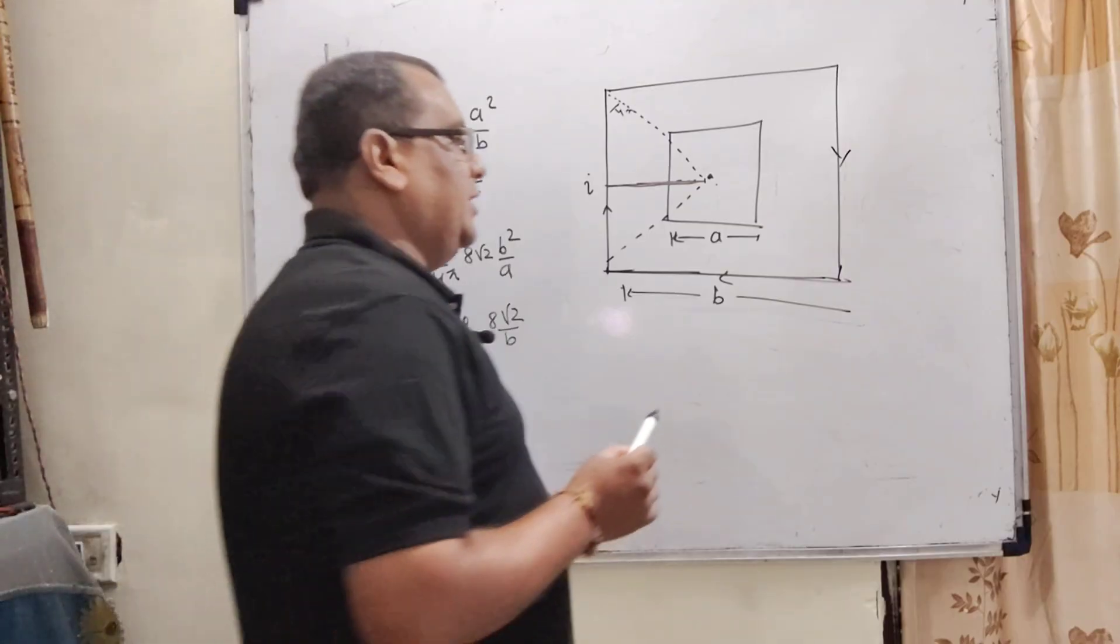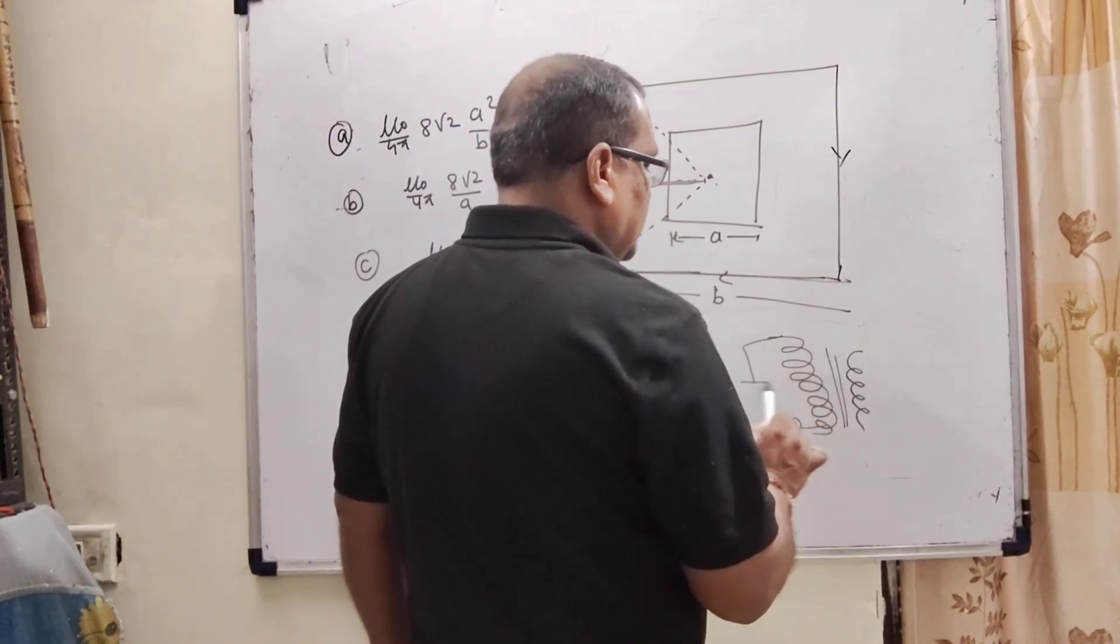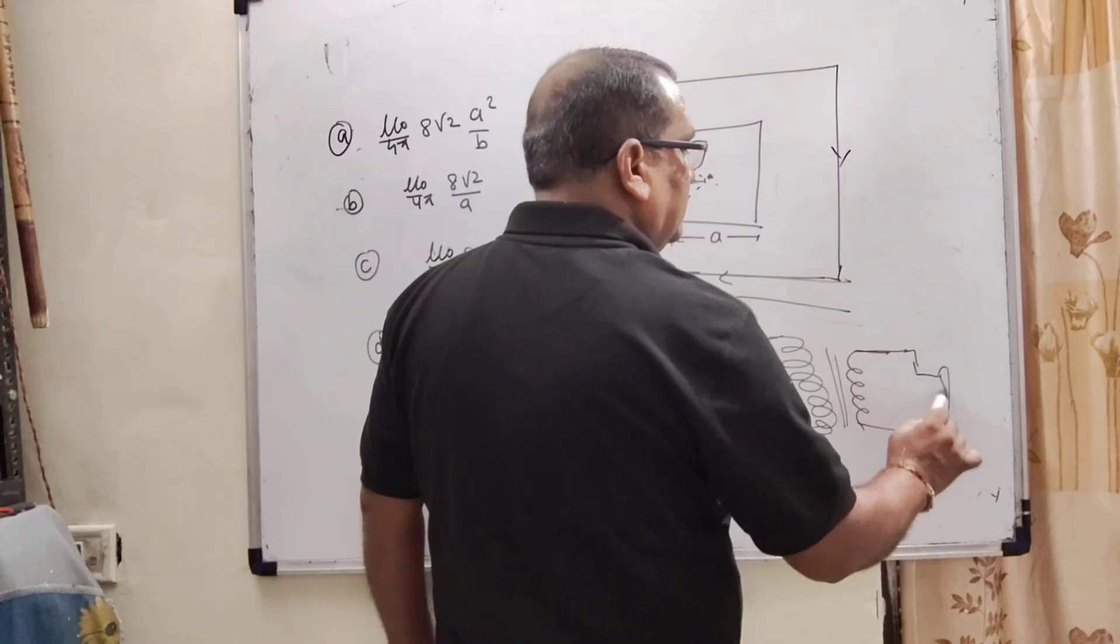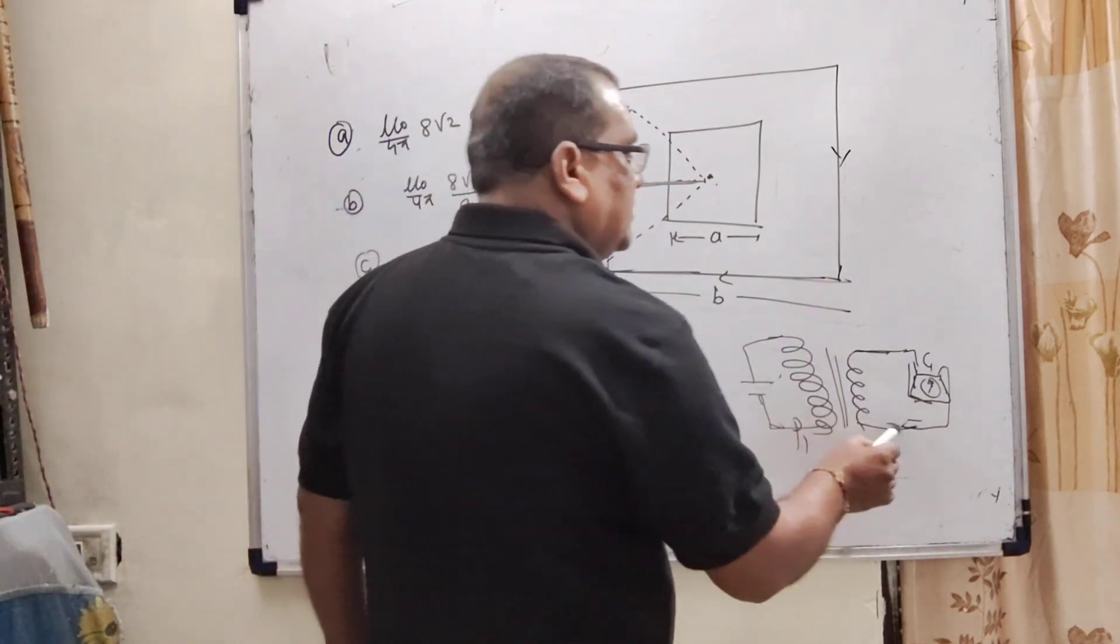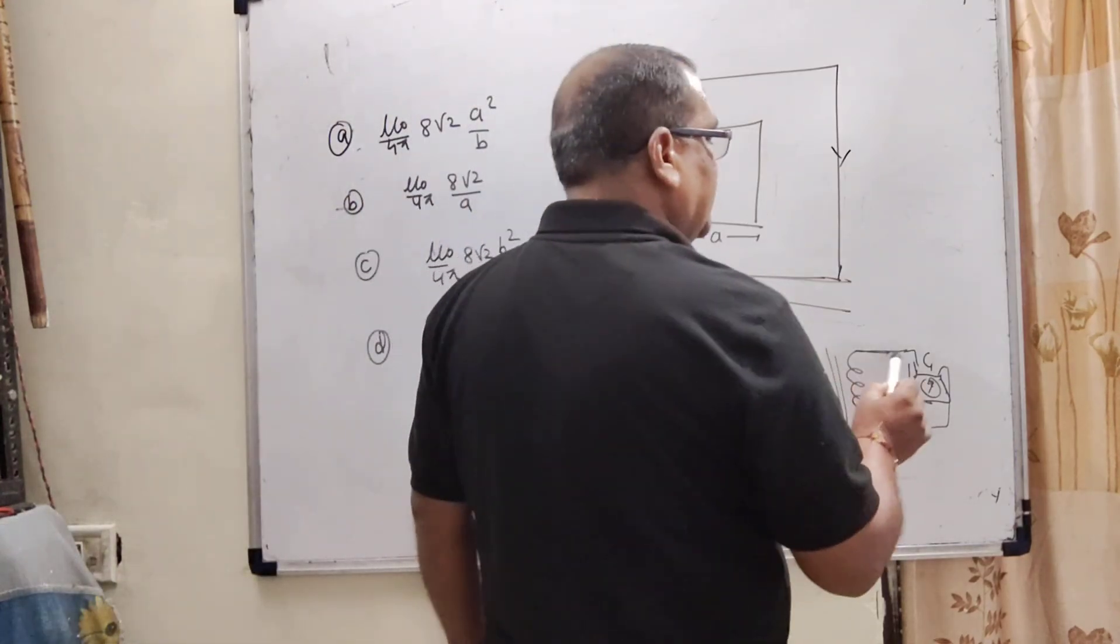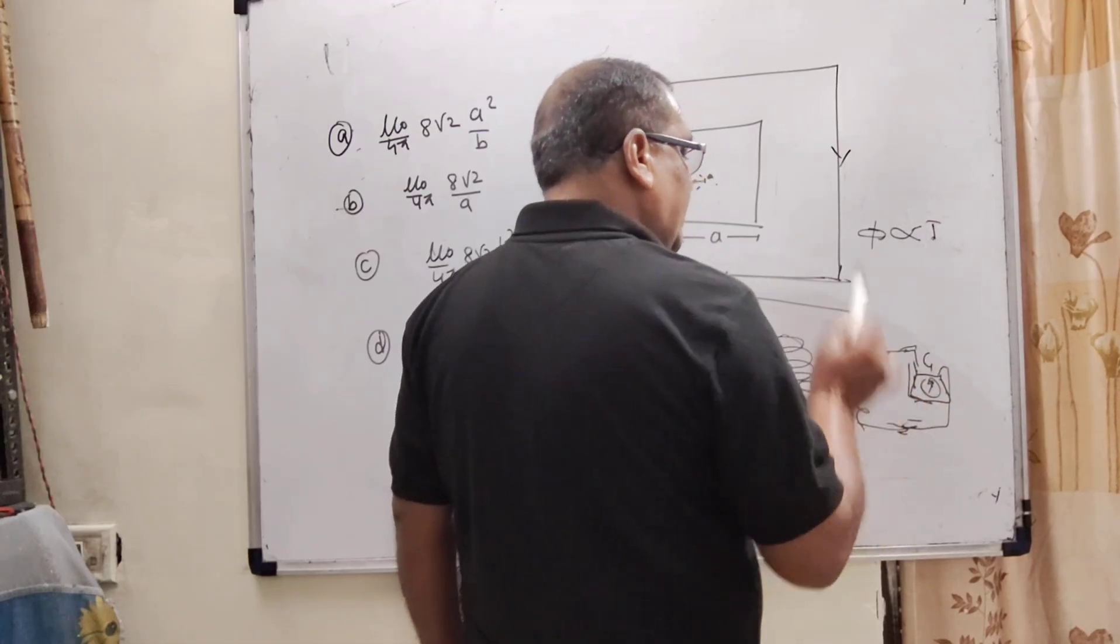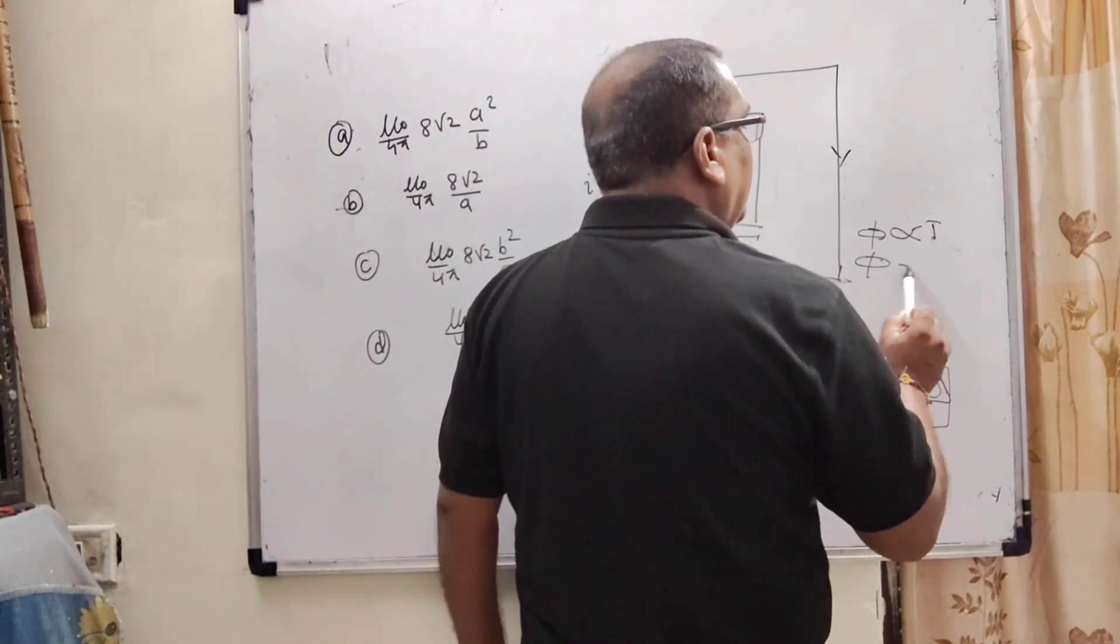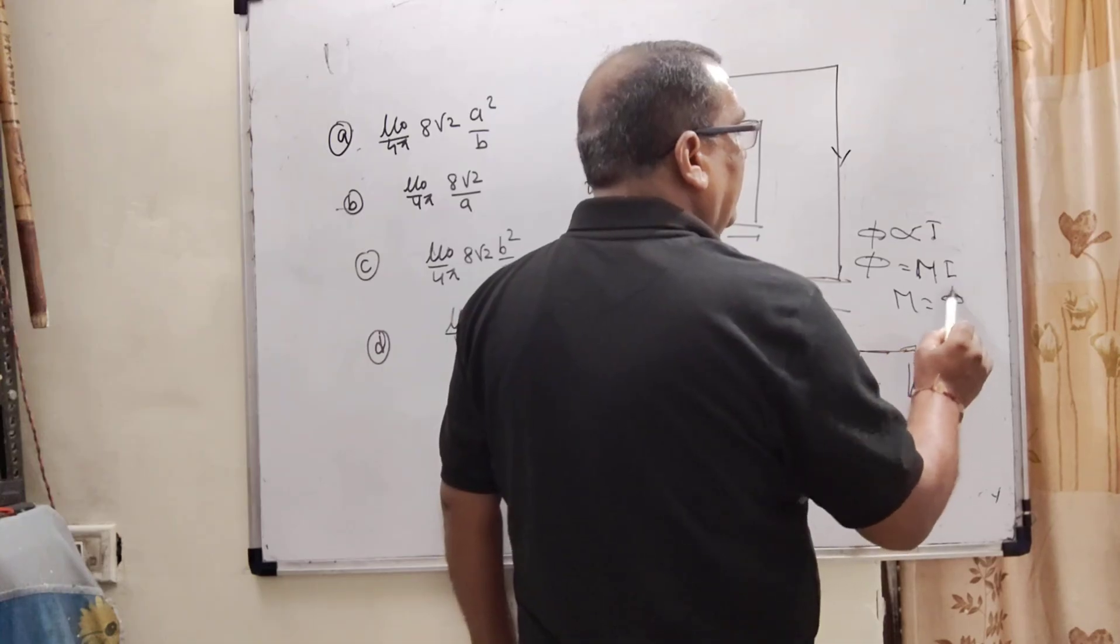And here we have mutual induction. As we know, what is mutual induction? When this is considered primary coil and this is secondary coil. When current flows in this primary coil due to the change in flux, here also this galvanometer shows the deflection. What does it mean? It means here some EMF is also produced due to this coil. So this is called mutual induction. And what is the formula of mutual induction? Flux is directly proportional to the current. Here φ is equal to M times I, where M is mutual inductance. So M equals φ by I.